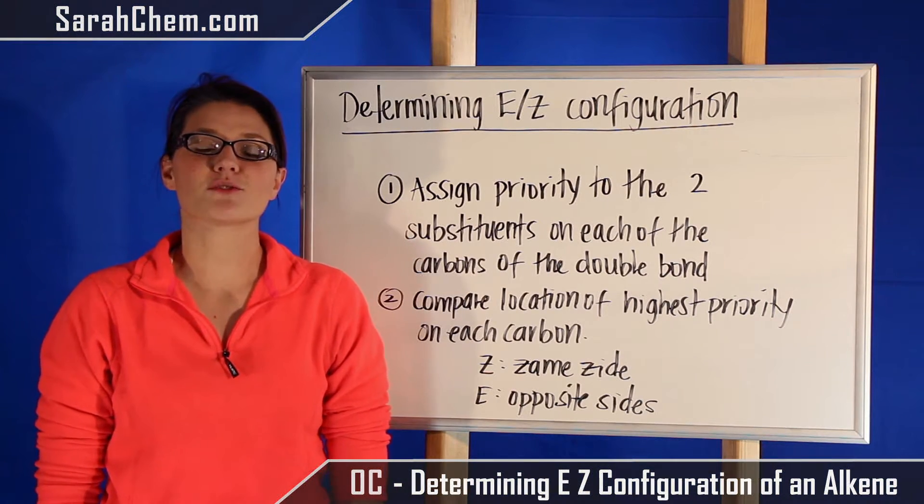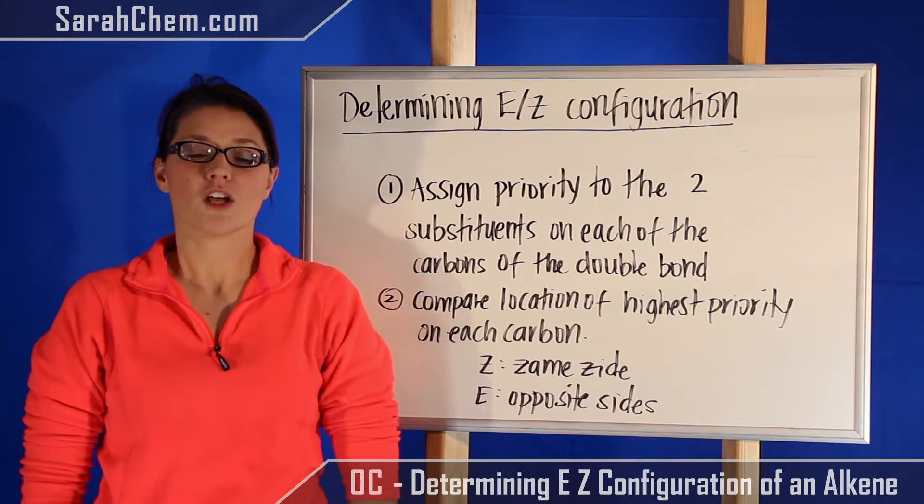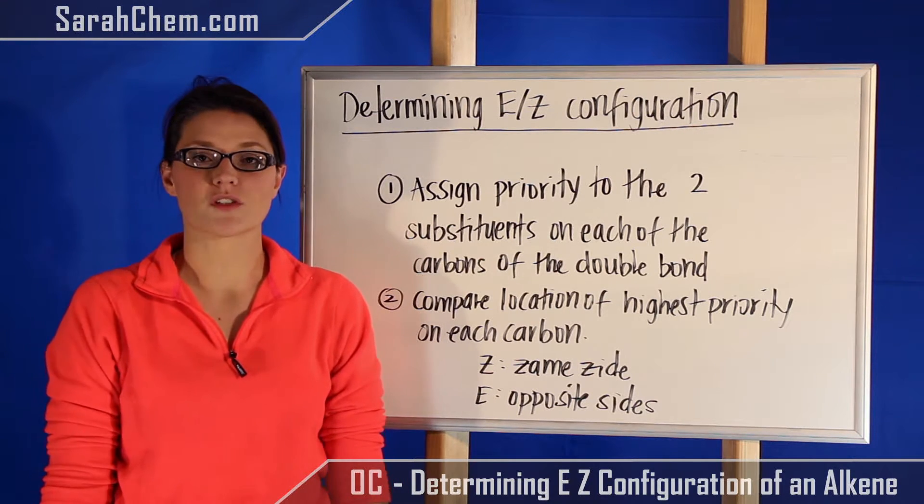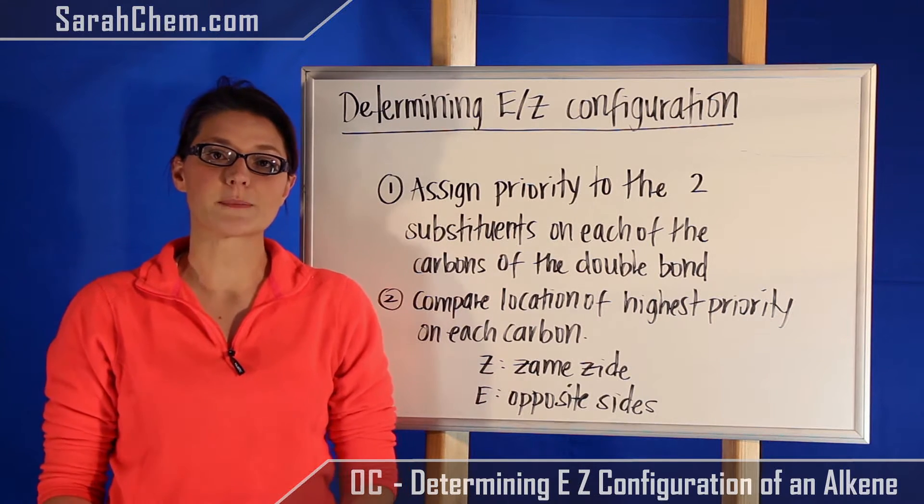Hi everyone, this is a video tutorial on how to determine the E/Z configuration of an alkene. First, let's establish what the rules are. The first one is that you need to label the priorities of the substituents